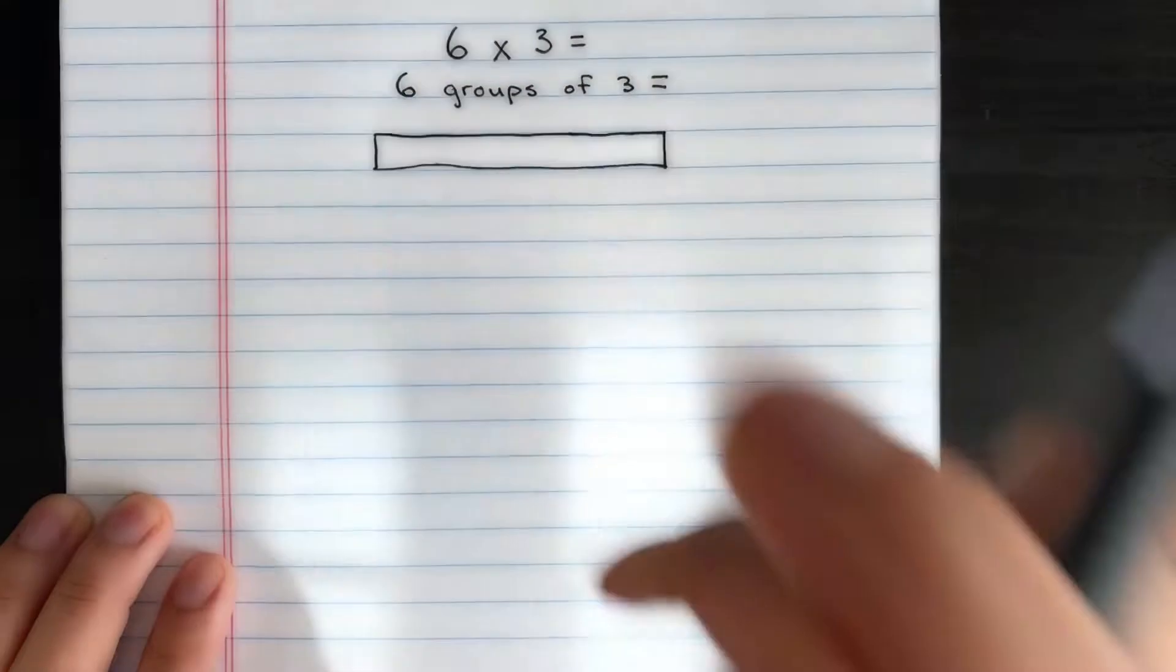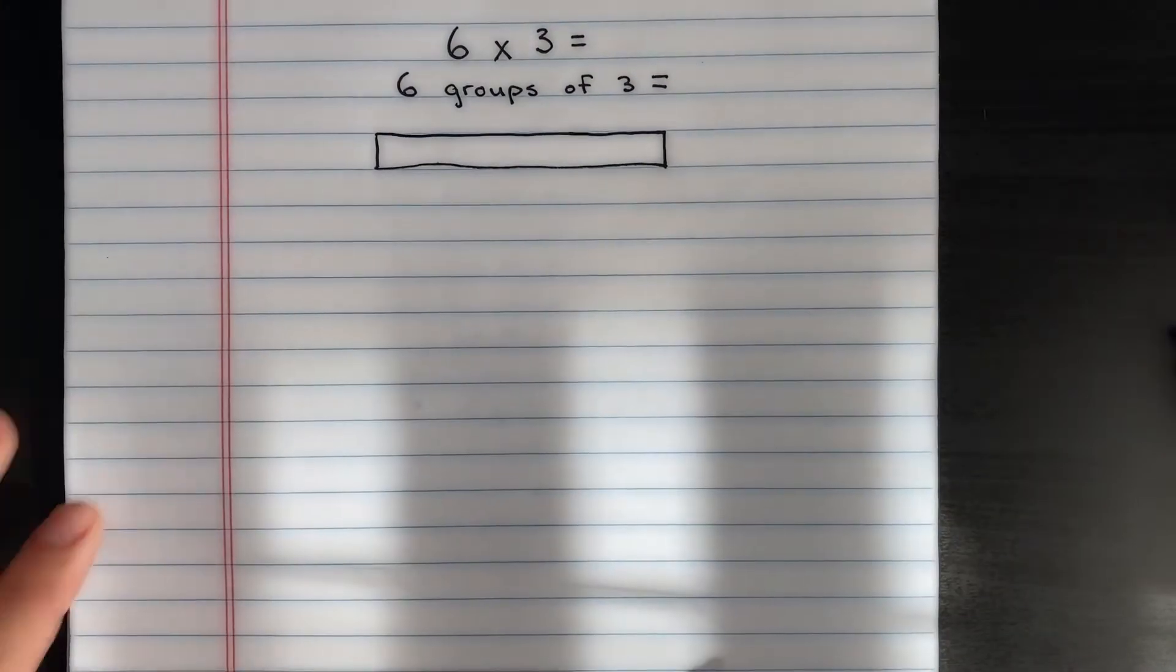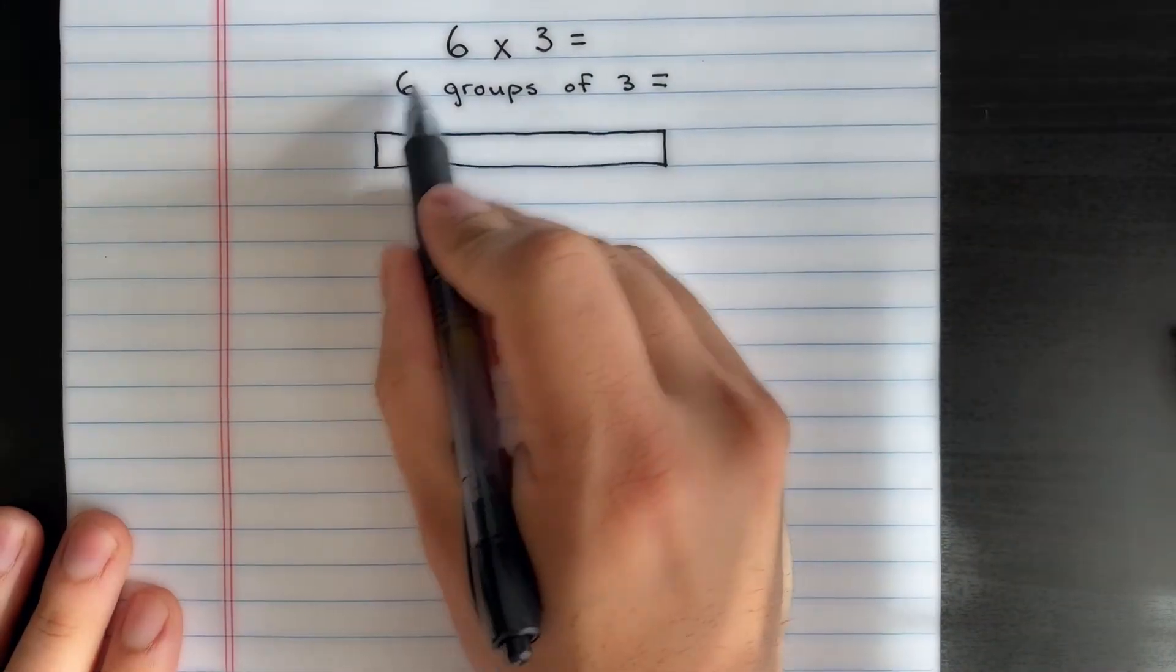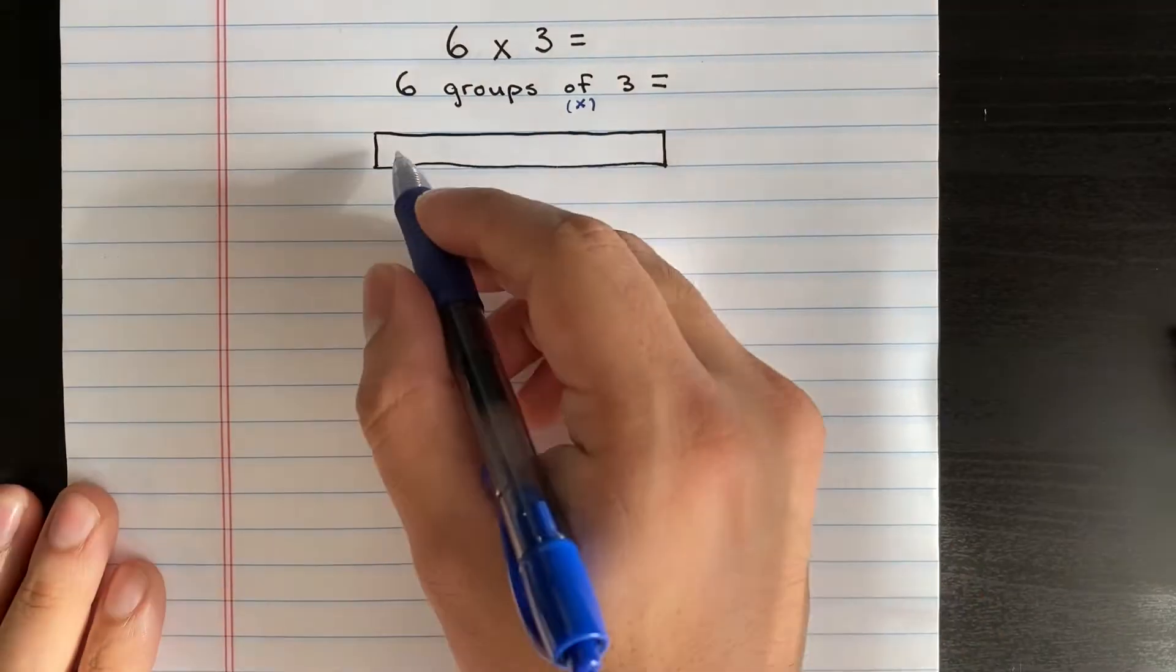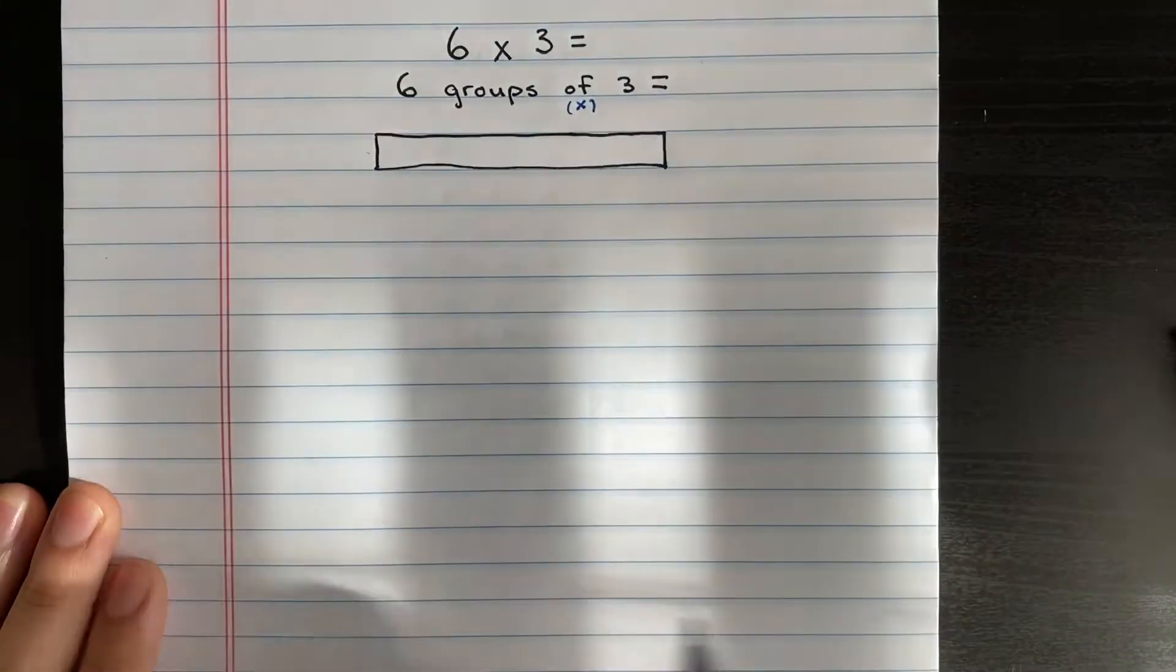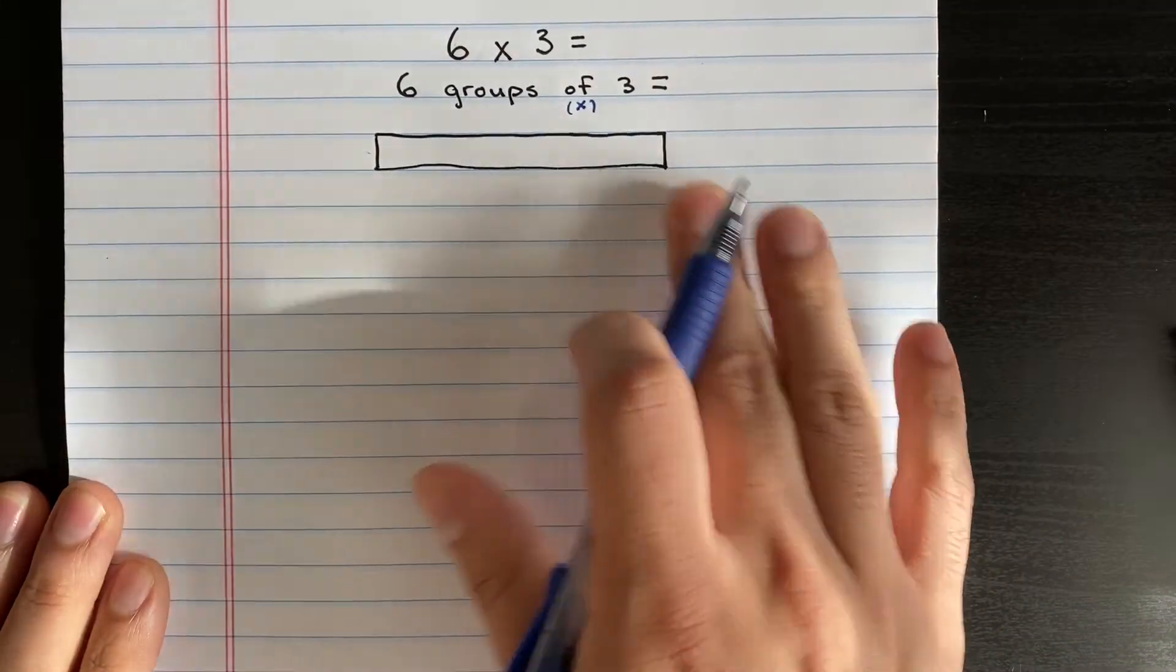Okay, now let's take a look at our problem: 6 × 3, or six groups. So we have our giant tape here, or a giant rectangle, and we have 6 × 3, or six groups.